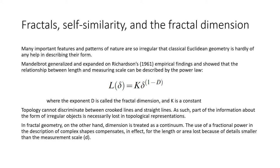Fractals, self-similarity, and fractal dimensions. Many important features and patterns of nature are so irregular that classical Euclidean geometry is hardly of any help in describing their form. Mandelbrot generalized and expanded on Richardson's 1961 empirical findings and showed that the relationship between length and measuring scale can be described by a power law, where D is called the fractal dimension and K is the constant.